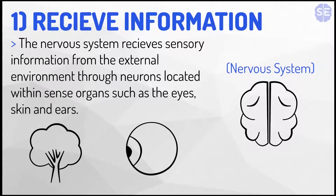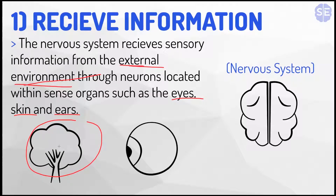The first function is receiving information. The nervous system receives sensory information from the external environment through neurons located within sense organs such as the eyes, skin, and ears. For example, the external environment is a tree, and the tree is seen through the eyes — which is a sense organ — and the eyes transfer the sensory information to the nervous system, which in this case is the brain.